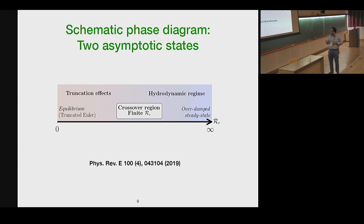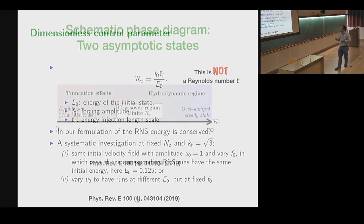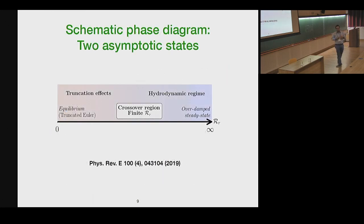The other limit is of very high forcing, where forcing amplitude is almost going to infinity, and what you have is essentially an overdamped dynamic, because as the forcing goes very high, the viscosity generated in response is also very high. So we have these two asymptotic regimes, and we want to see what is happening as we vary r and want to probe what is happening in the crossover region.